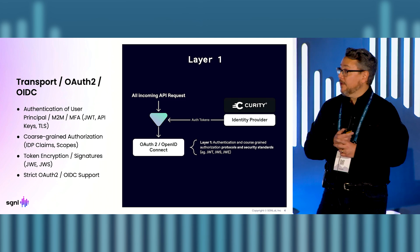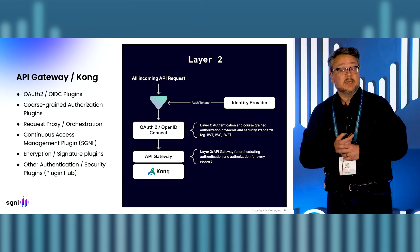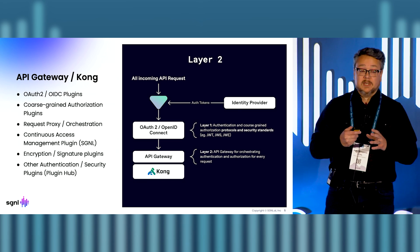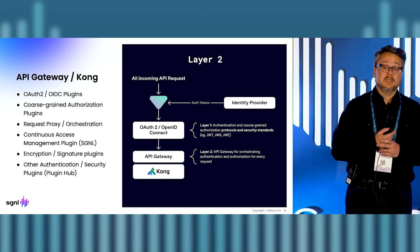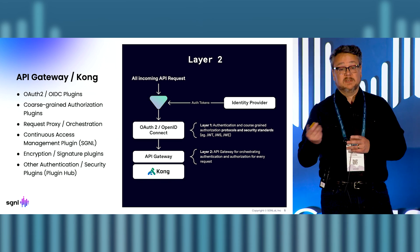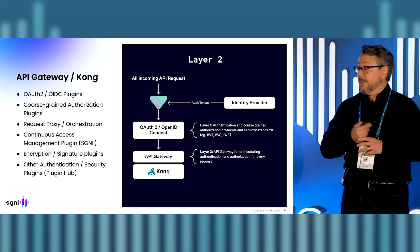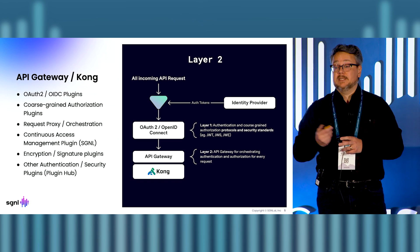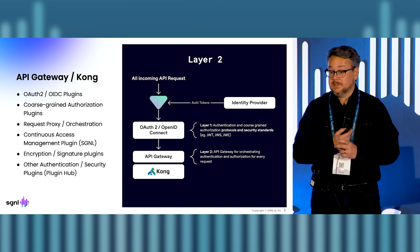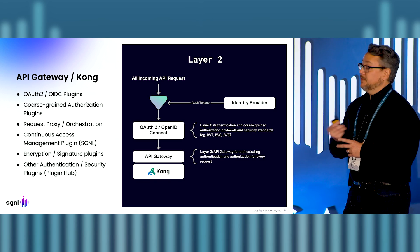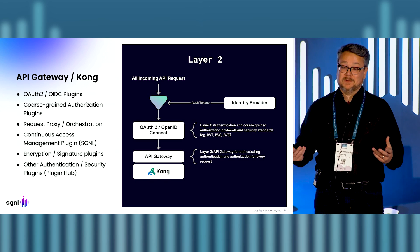After that, the second layer — the Kong gateway — goes into action. Through the Curity plugins and the Signal plugins, it will capture that request and context. Curity will validate and introspect the token so you know who it is. We also have a Signal plugin that does the same, using a trust-but-verify method.